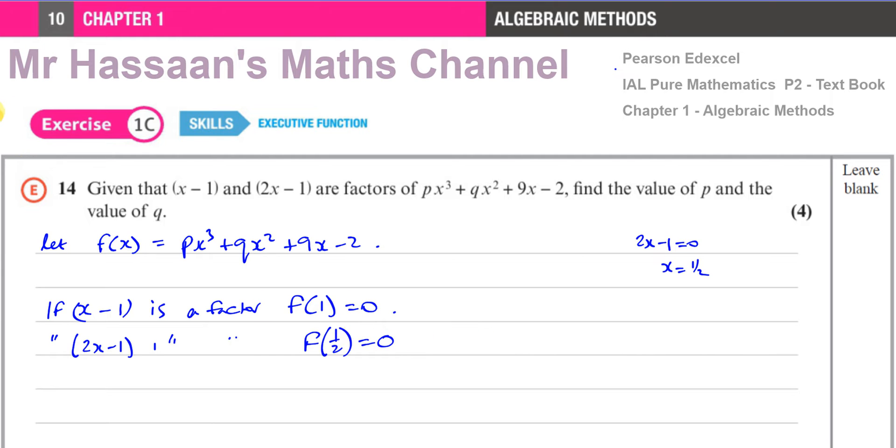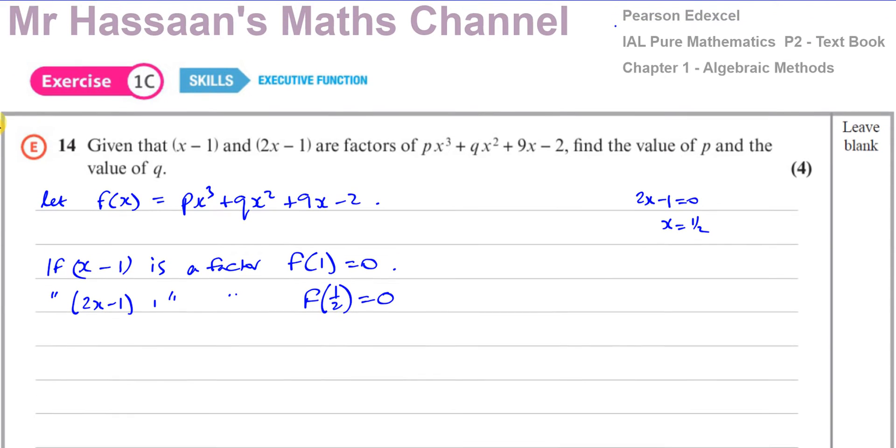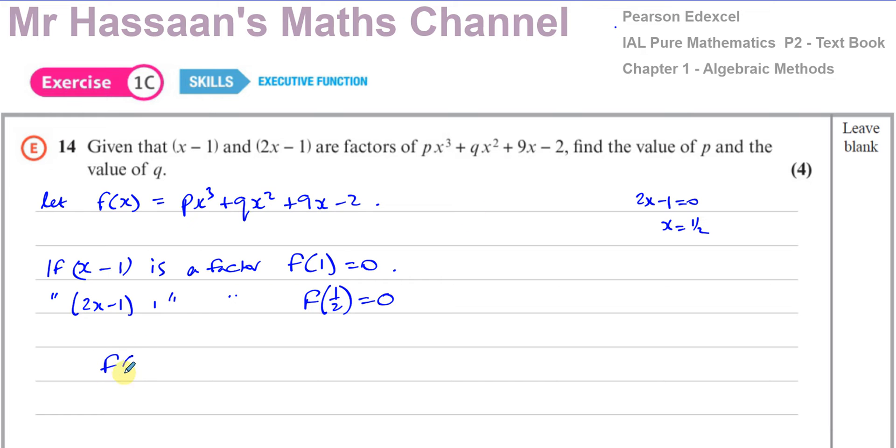So if these two things are true, let's just put them into the expression. We have f(1) is going to give us p times 1³ + q times 1² + 9 times 1 - 2, which gives us p + q + 9 - 2, which is p + q + 7.